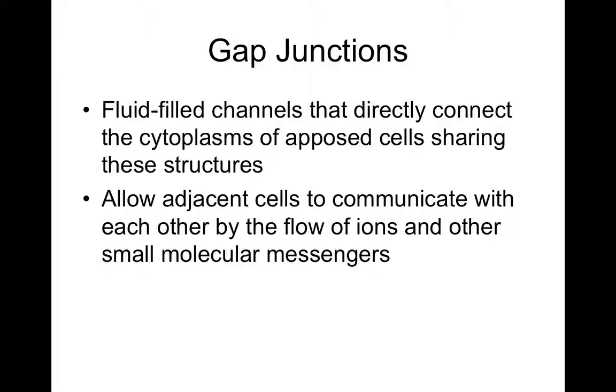There's an autoimmune disease where someone's immune system can attack these desmosomes. It's inheritable and occurs in about one in five million people, which with 5.3 million people in Colorado means it's just not super common, but it's interesting to consider.